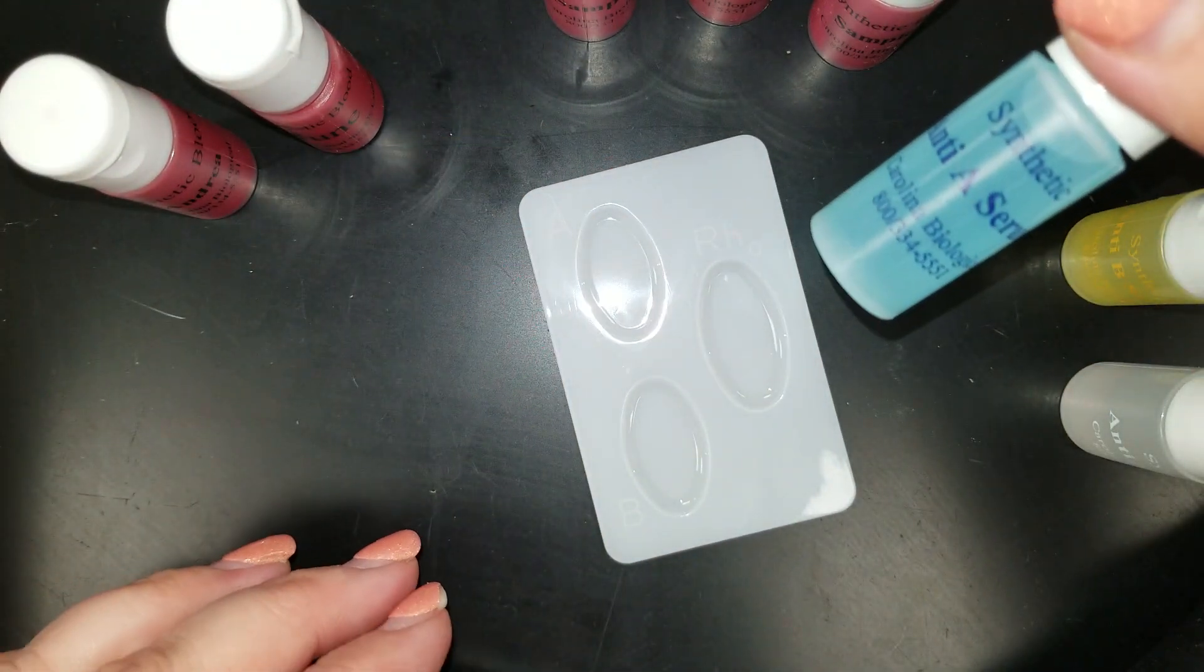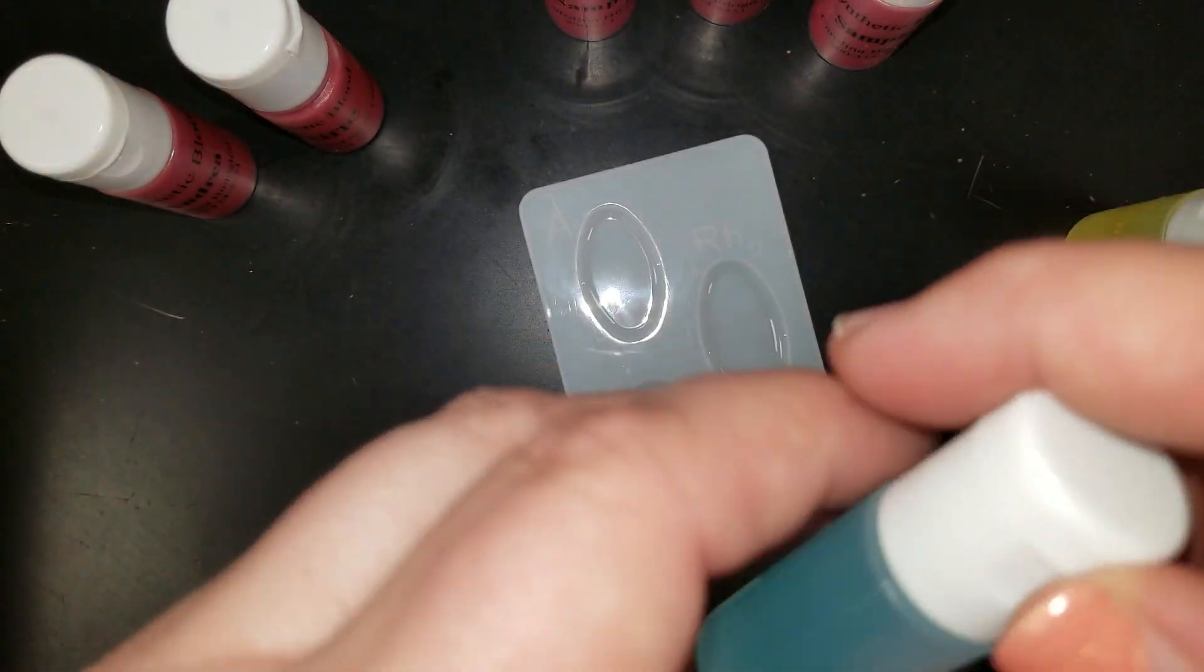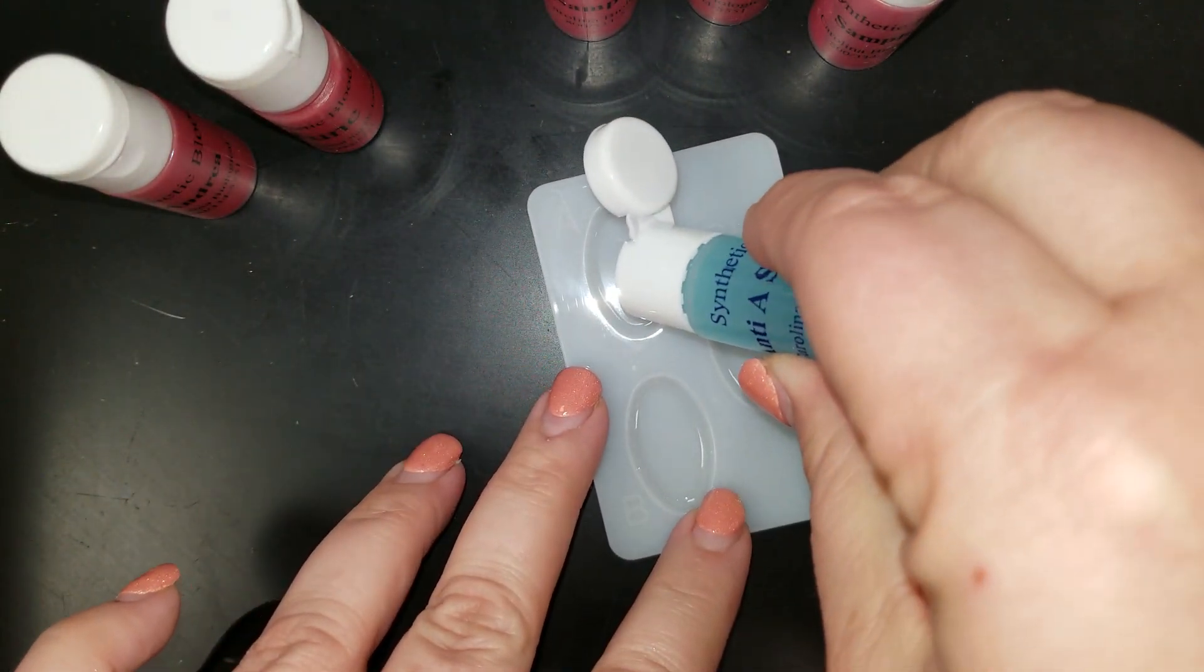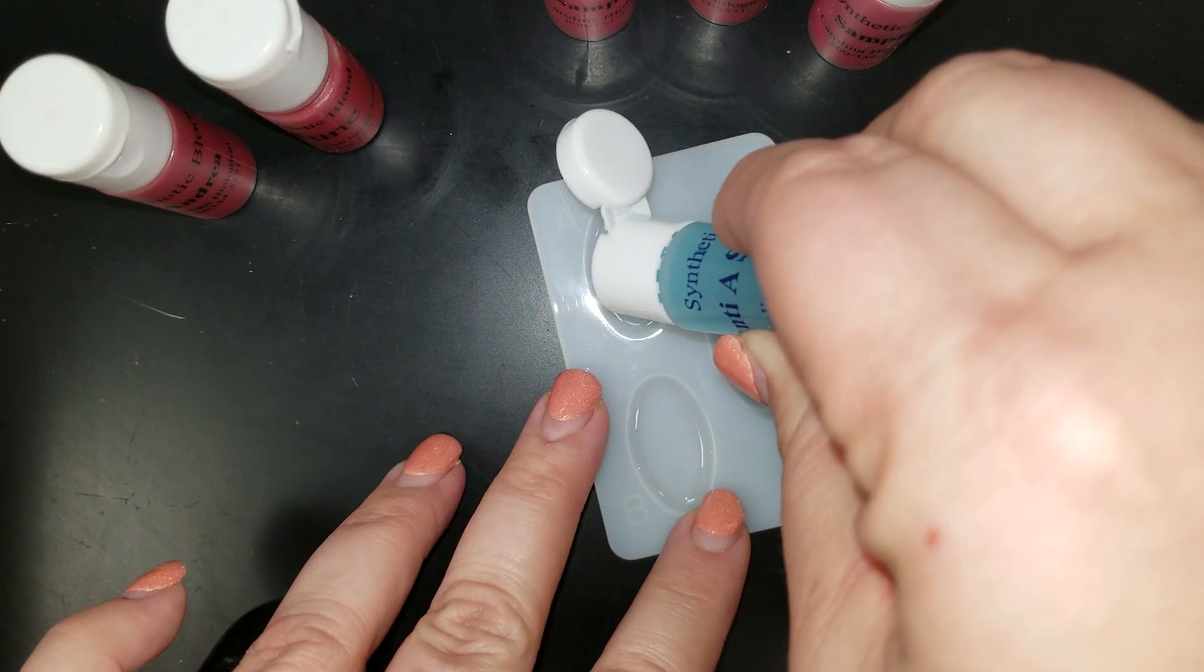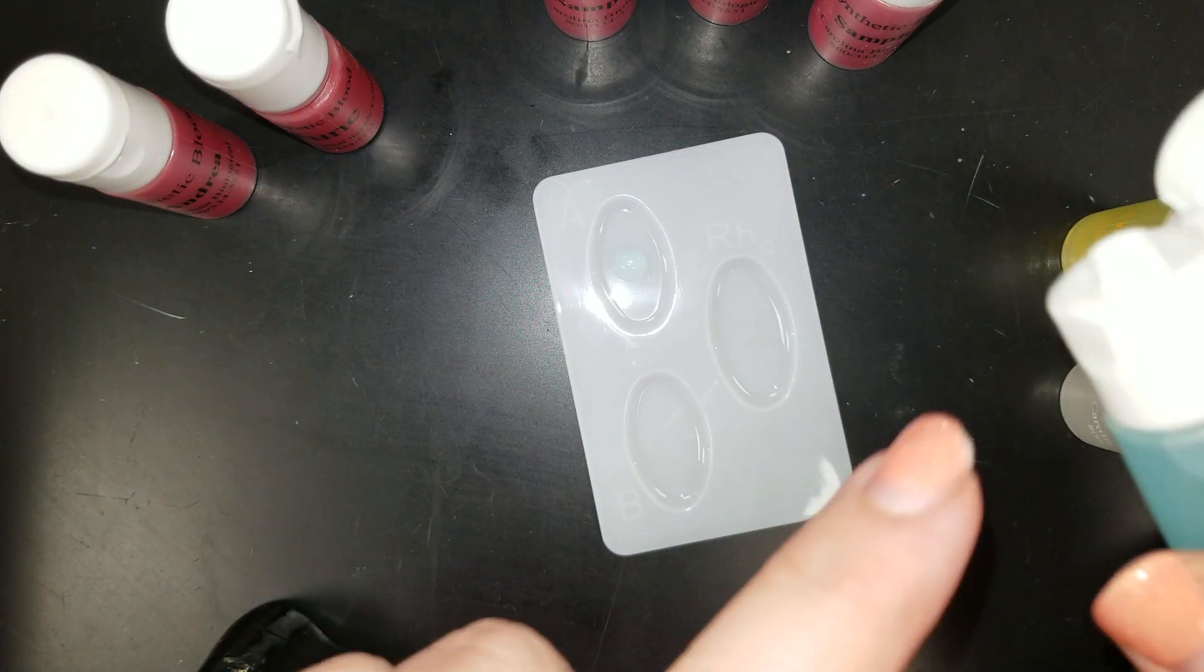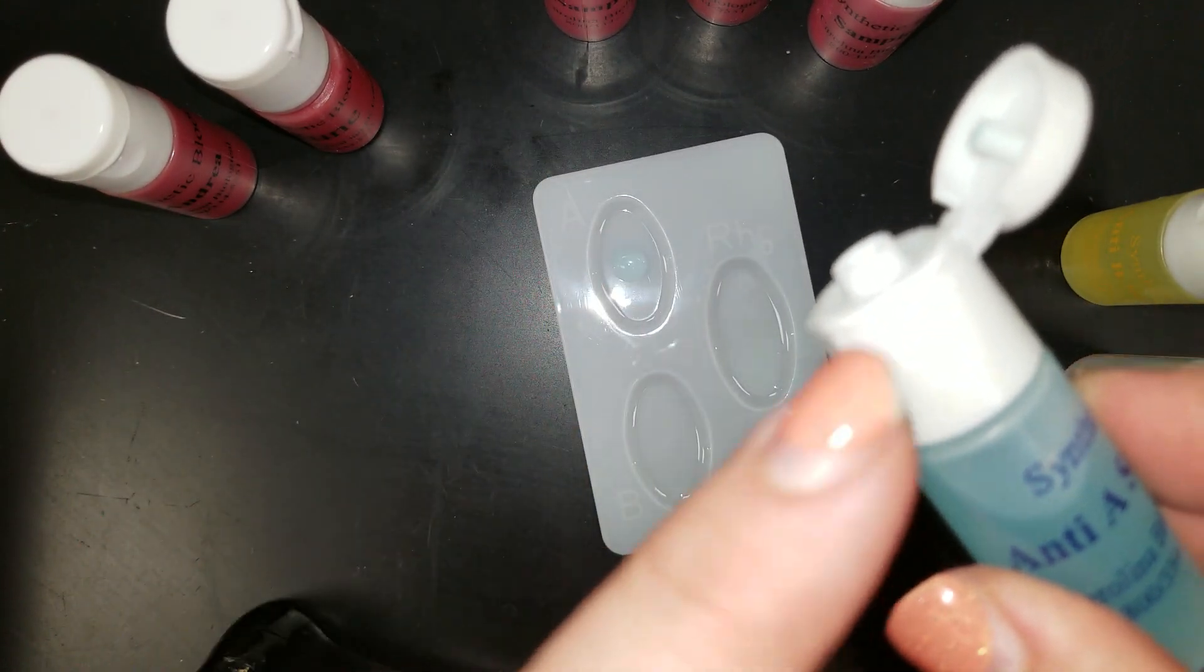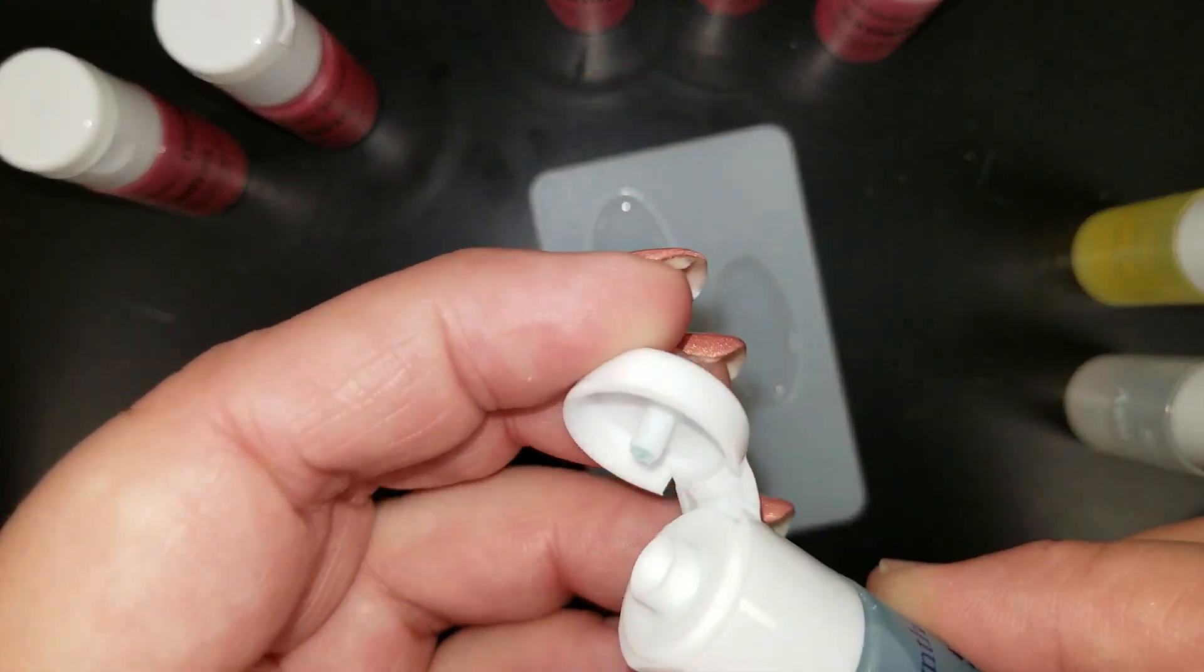So your serum is also labeled, your anti-A sera is blue, and you're just going to place one drop into the serum A well. Be sure not to touch these tips to any of your other surfaces. Nothing should touch this tip that would cause contamination.